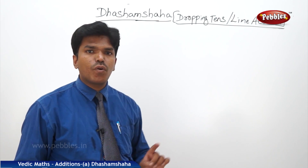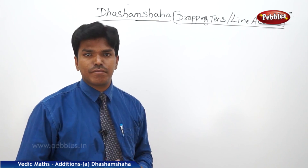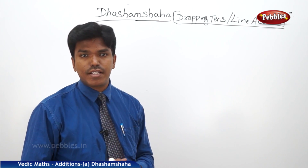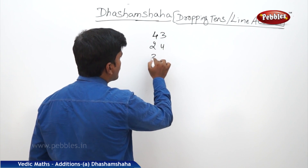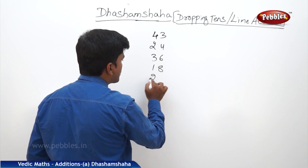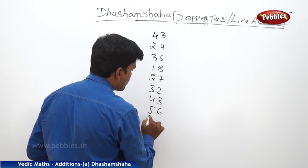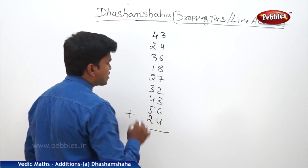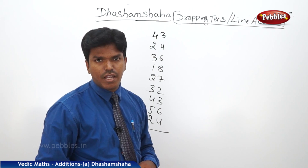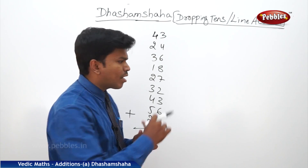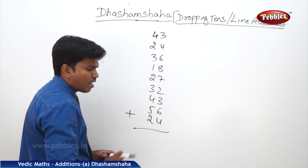We have seen only one-line addition. Now if 2 or 3 lines come, then how? Let us take one example: 43, 24, 36, 18, 27, 32, 43, 56, 24. I want to add these numbers using line addition — that is Dasamsaha. Now we will start from the right side.